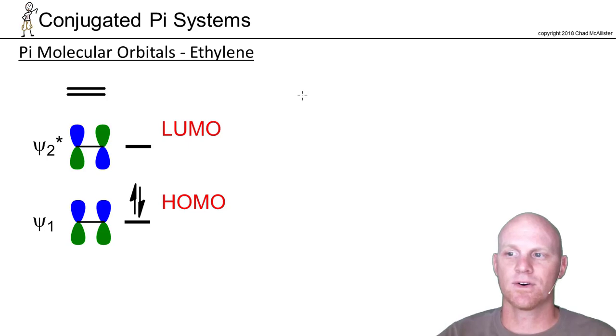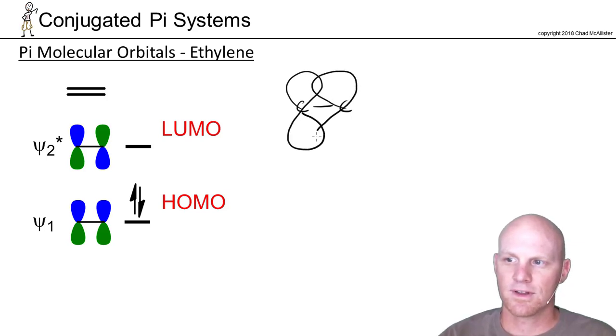We're going to start with ethylene here. Ethylene is just two carbons and some hydrogens. Then you've got these p orbitals that are going to overlap sideways. That sideways overlap is what leads to the creation of both pi bonding as well as pi anti-bonding molecular orbitals.